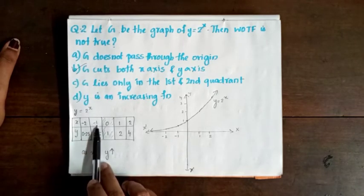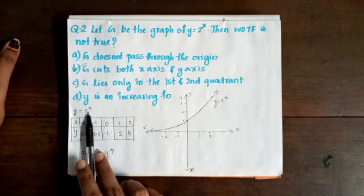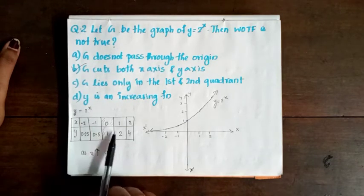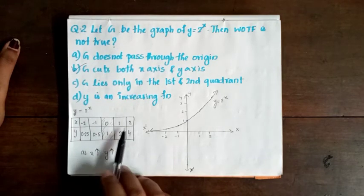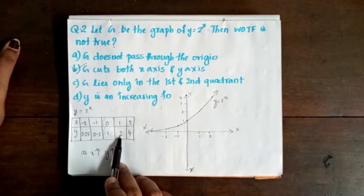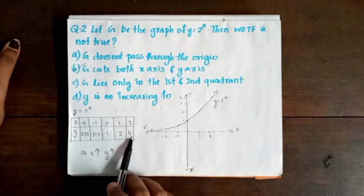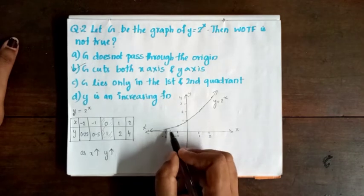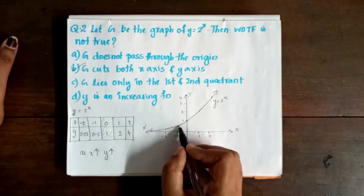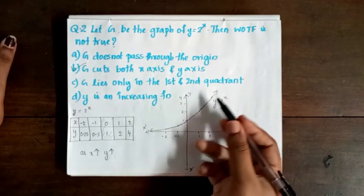x equals negative 1 gives y equals 0.5; x equals 0 gives y equals 1; x equals 1 gives y equals 2; x equals 2 gives y equals 4. I will plot these points and join the graph.